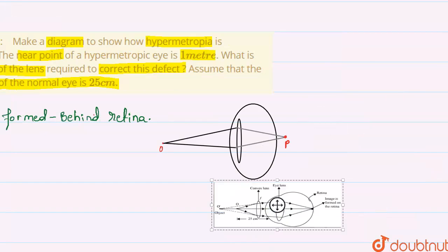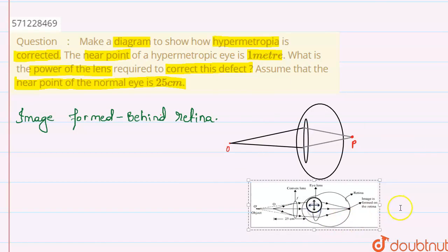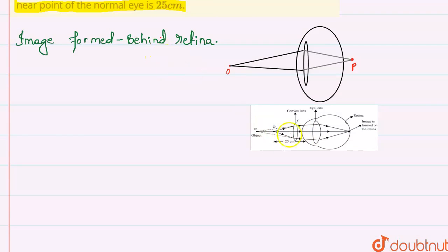We introduce the convex lens in front of the eye lens. For this configuration, the image of an object placed at O — that is, the normal near point of the eye — is formed on the retina, and for the man it appears to be at O dash, which is at the near point of the man.